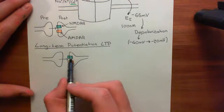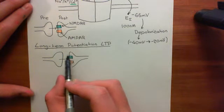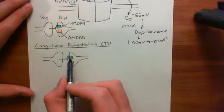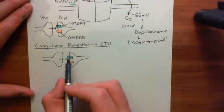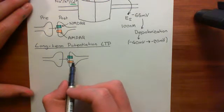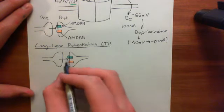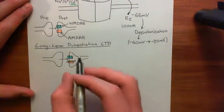Rather, the NMDA receptors will open, but they will still have the magnesium ion blocking them, because this neuron has a resting electrical potential difference across its cell membrane, and therefore the magnesium ion is currently blocking the pore. So you'll get nothing coming through the NMDA receptor, but through the AMPA receptor you'll get a depolarising current, which will cause an excitatory postsynaptic potential.